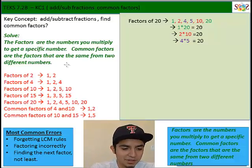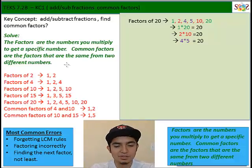The factors are the numbers you multiply to get a specific number. Common factors are factors that are the same from two different numbers.